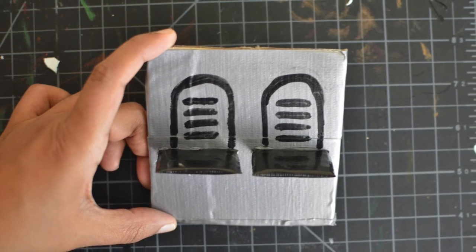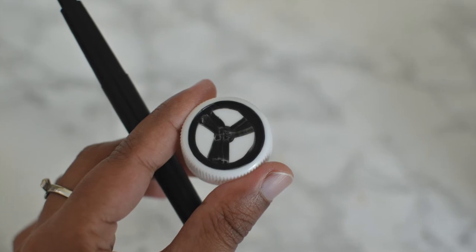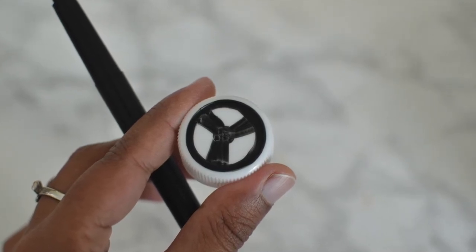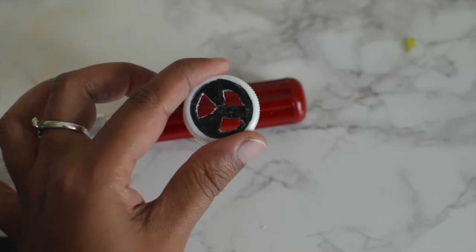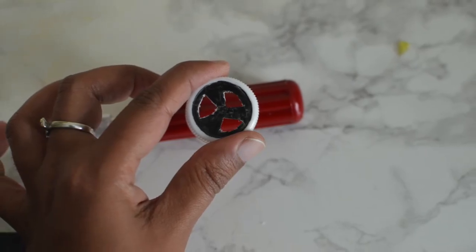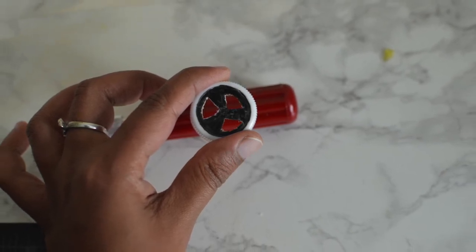Now let's make the steering wheel using the bottle cap of the milk carton. Draw the design using a marker and then cut the parts using a craft knife. Be careful while doing this step as it was harder to cut through the cap. Once the cutting part is done, paint the whole cap black.